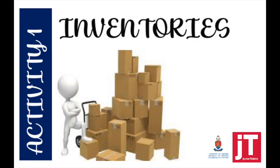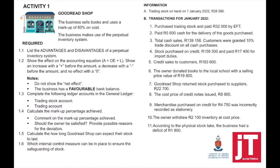In Activity 1, we're going to go through everything that you've basically done in Grade 10. The focus is going to be on a perpetual, or continuous, inventory system. Looking at this activity — Goodread Shop — the business sells books and uses a markup of 80% on cost. The business makes use of the perpetual inventory system. Question 1.1: list the advantages and disadvantages of a perpetual inventory system.